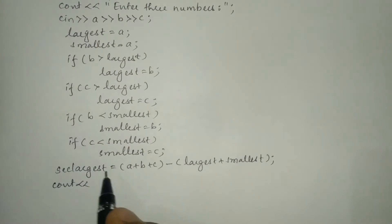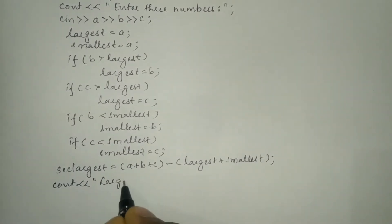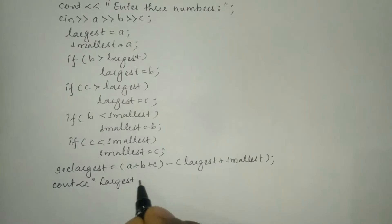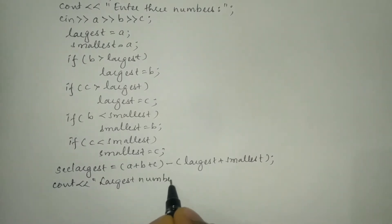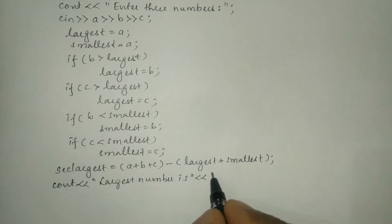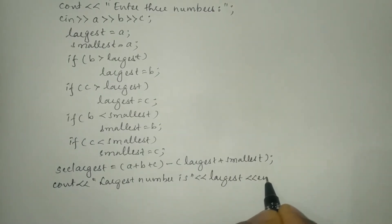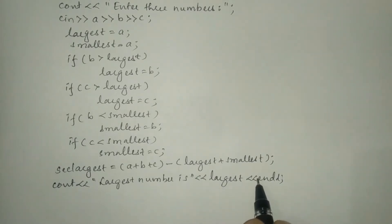Now we are going to print the values stored in largest, smallest, and second largest. Using cout with the stream insertion operator, I write: "Largest number is" in double quotation marks, then stream insertion operator followed by the variable largest.